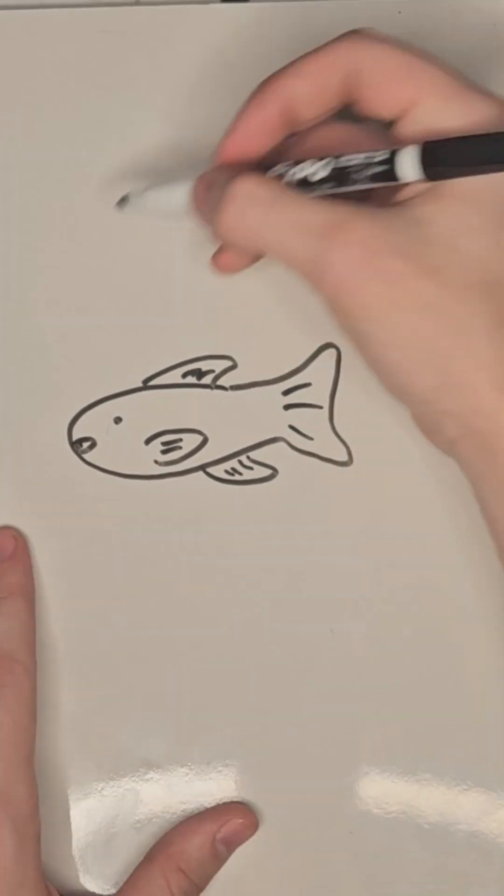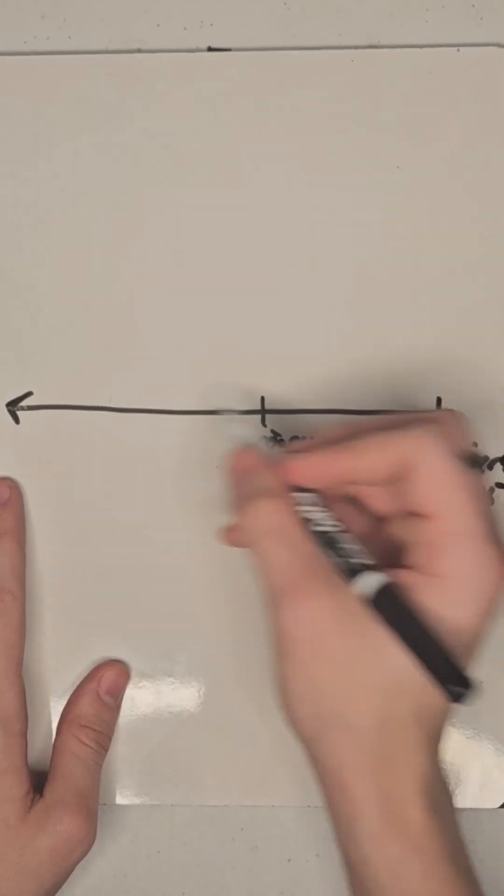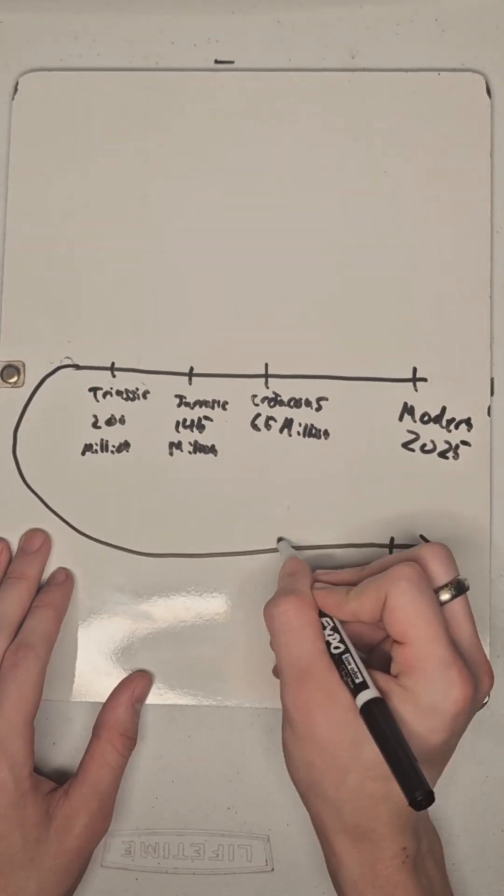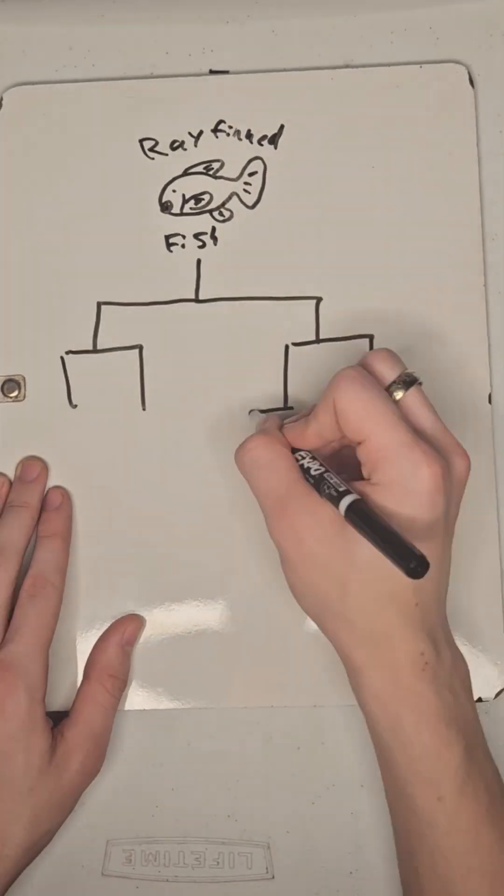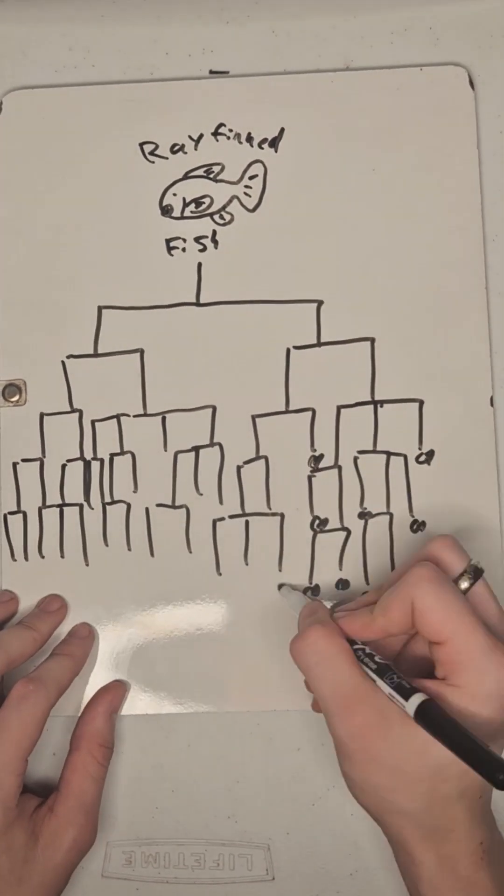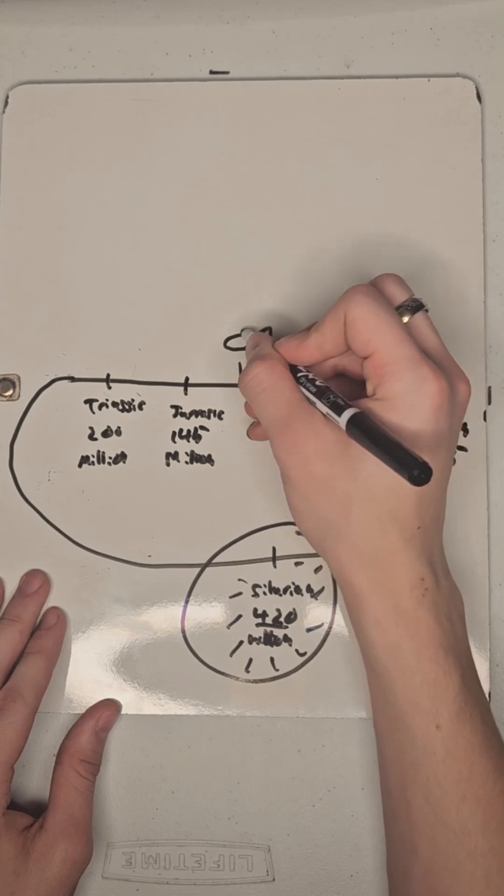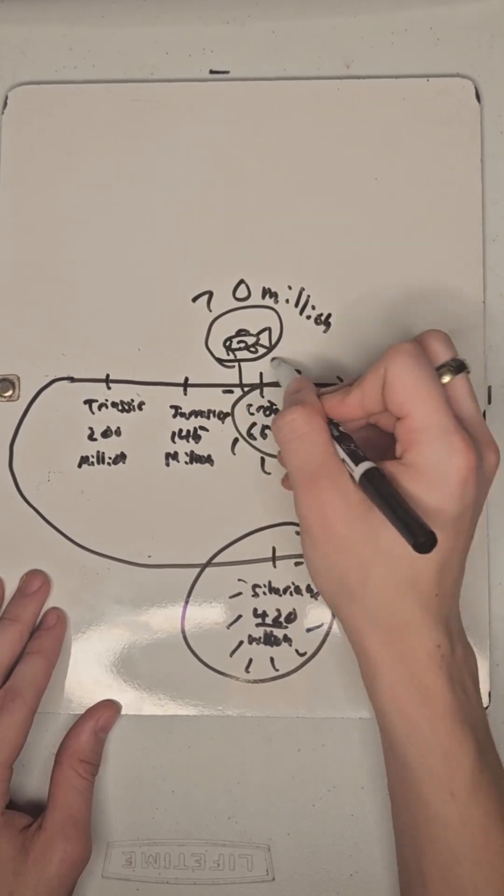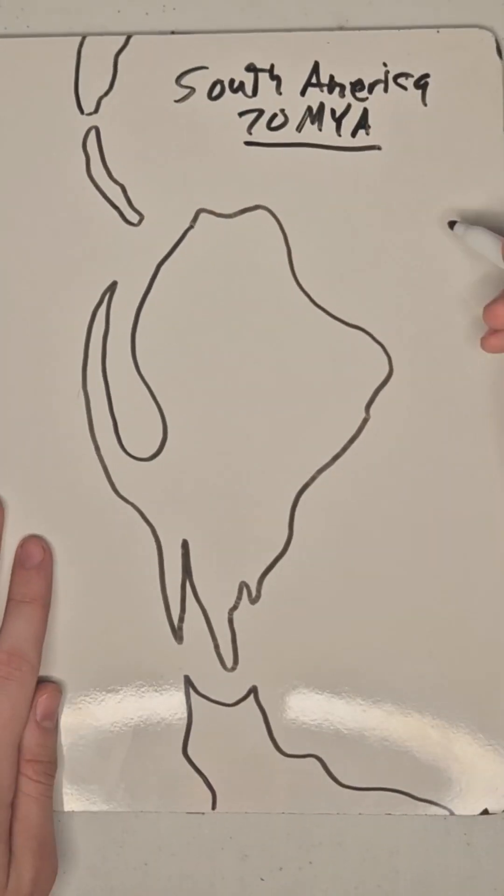Well, catfishes are ray-finned fish, an extremely old group of animals that first appeared 420 million years ago in the Silurian time period. Ray-finned fish grew and expanded into hundreds of different forms over the millennia, but it wasn't until about 70 million years ago during the late Cretaceous that the first catfishes appeared. They started out in the rivers of South America,